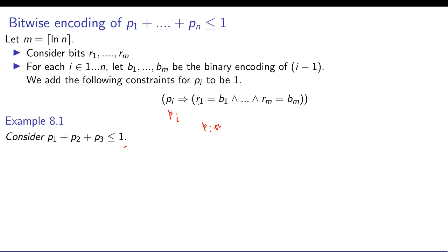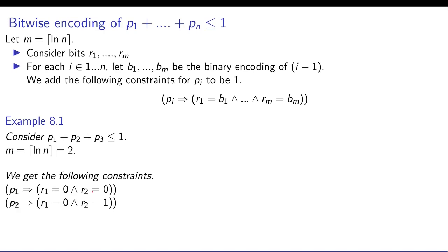An example will make it clear. Let's suppose you have p1 plus p2 plus p3 less than equal to 1. So log number of bits is 2. So we need to introduce two variables and we can say if p1 is true then r1 must be 0 and r2 equals to 0. Similarly for p3 you have r1 equals 1 and r2 equals 0. Now any time these two become true you will have a contradiction because these two don't agree.